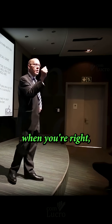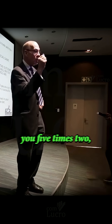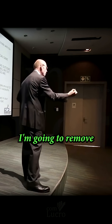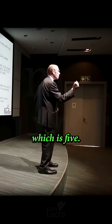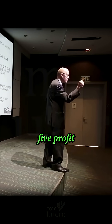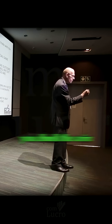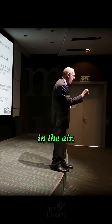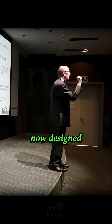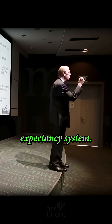So with 10 throws of the coin, when you're right I'm going to pay you five times two, which is ten. And when you're wrong I'm going to remove five times one, which is five. Thus you make ten, you lose five — five profit. If you bet a rand on every time you flip the coin, on average you're going to make 50 cents. You have now designed a positive expectancy system.